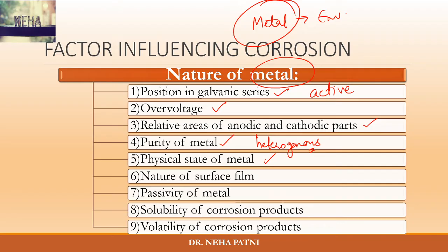Physical state of metal is also important. If the grain size of the metal is smaller, then greater would be its solubility and greater would be the corrosion. So we have to consider how the physical state of the metal influences corrosion. Coming to the next factor, which is the nature of the surface film: when the metal is corroded, a surface film is formed, and this surface film will decide whether further corrosion will take place or not.